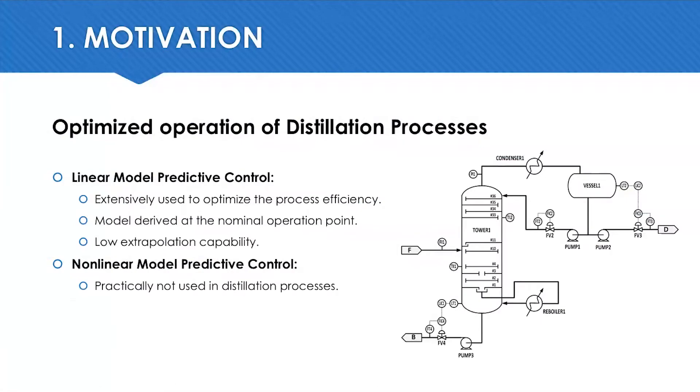The motivation is the optimal operation of distillation processes. Over the years, linear MPC was extensively used to optimize the efficiency of distillation columns. The model is a linear approximation at the nominal operation point. Its main limitations are related to low extrapolation capability.